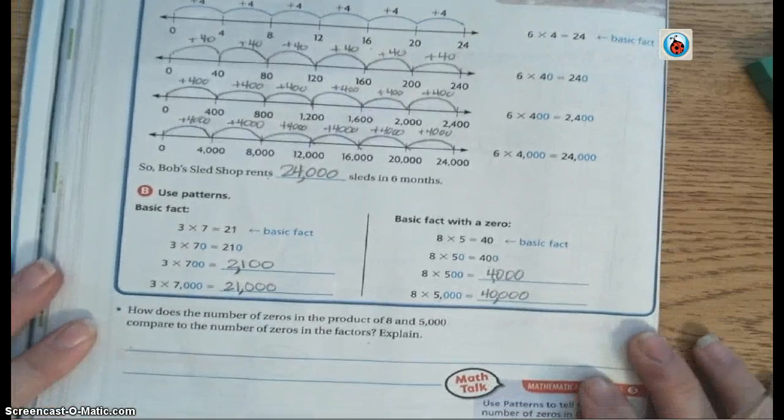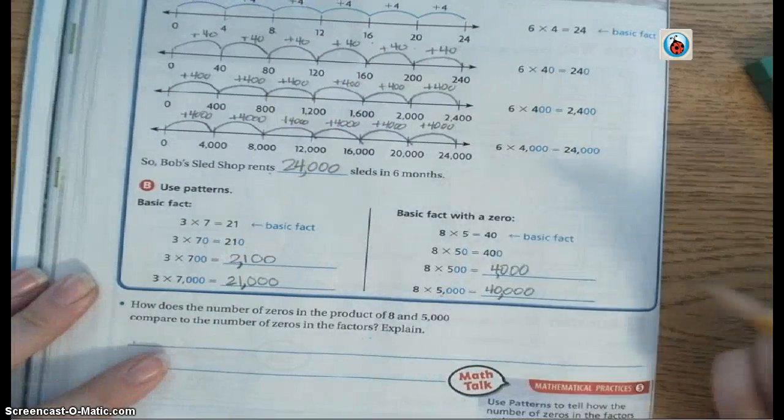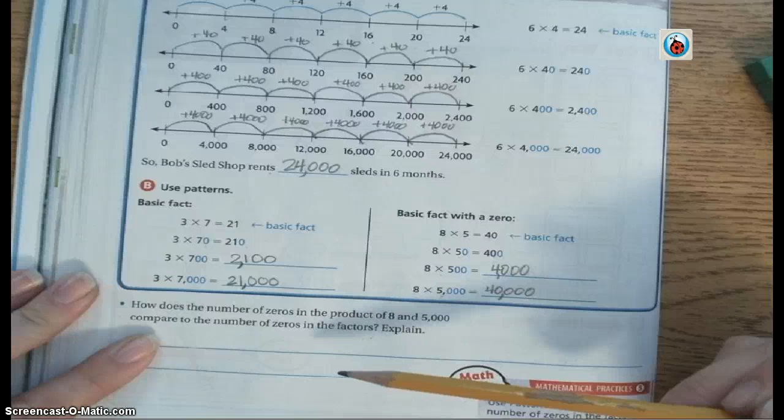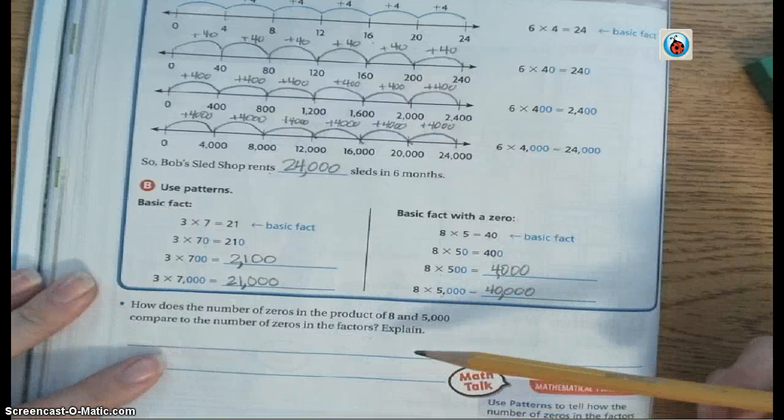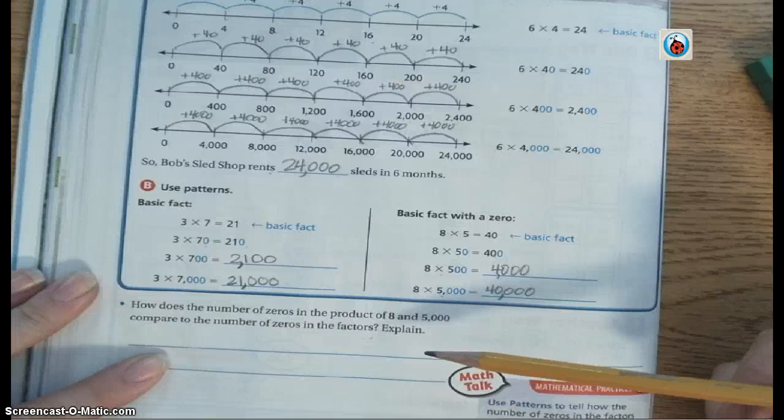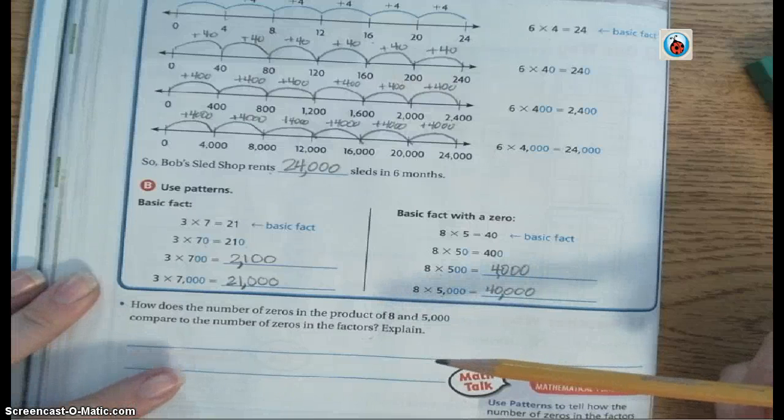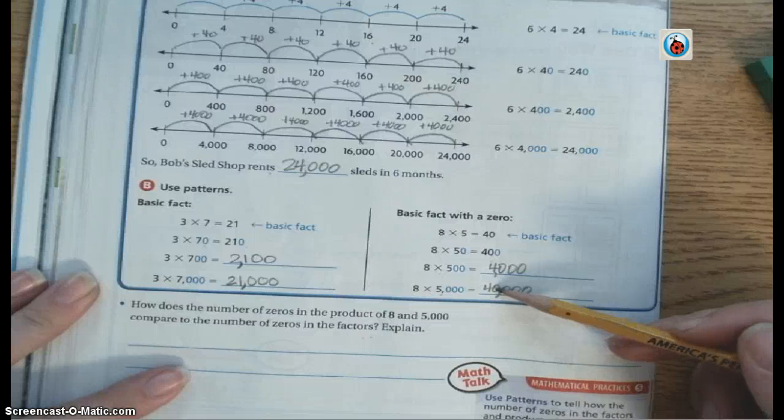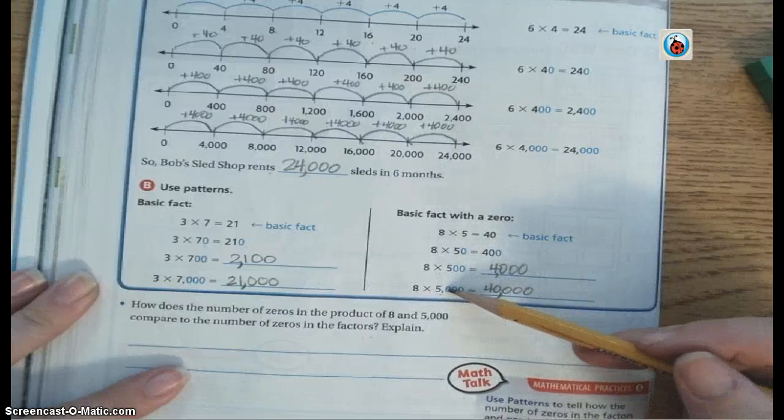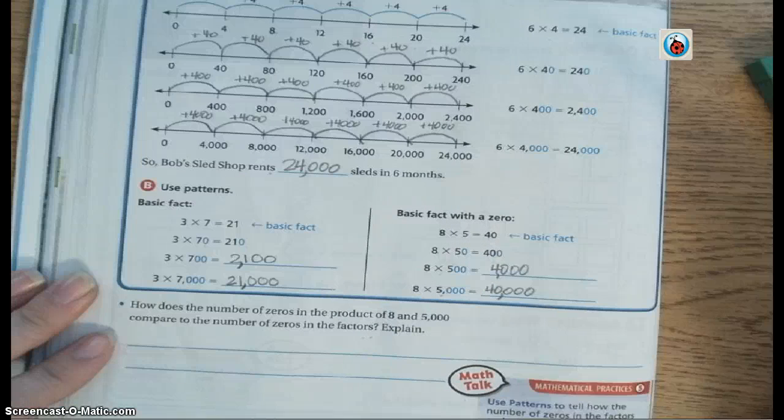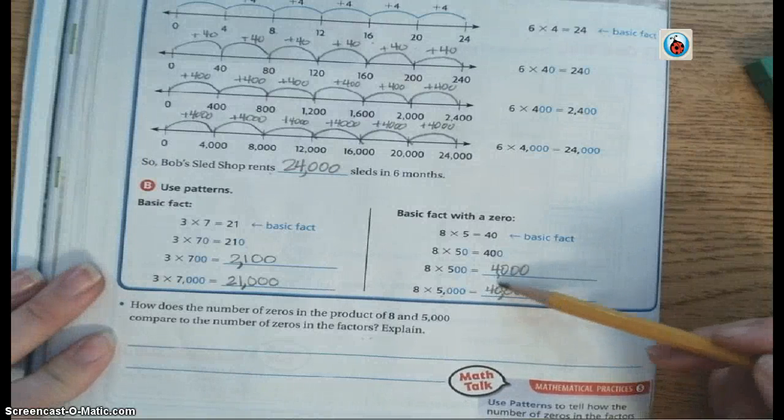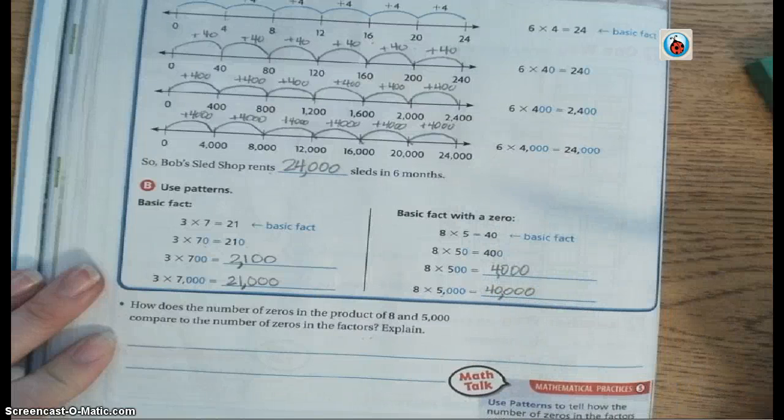When you look at the bottom, how does the number of 0s in the product of 8 times 5,000 compare to the number of 0s in the factors? Explain. So when I'm looking at this, there are 4 0s in the product: 1, 2, 3, 4. And only 3 0s in the factors: 1, 2, 3.